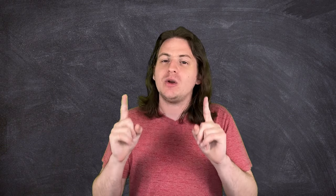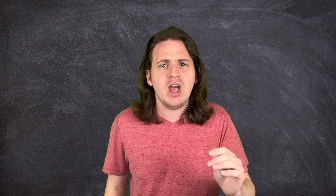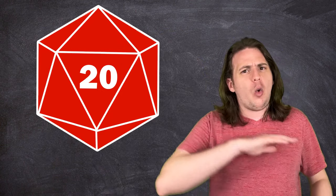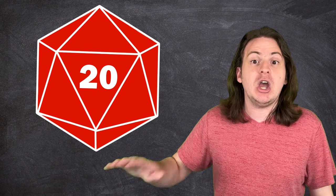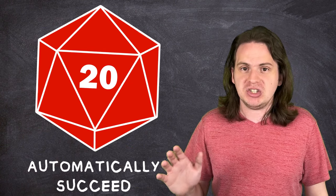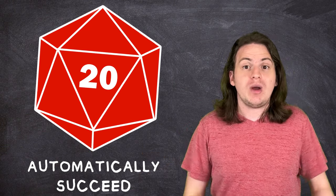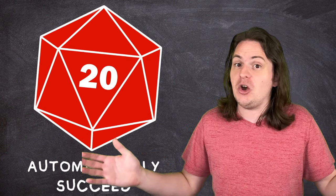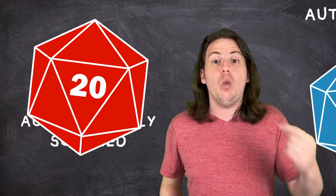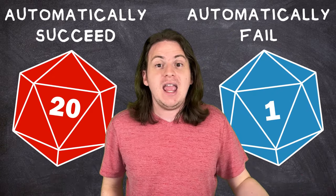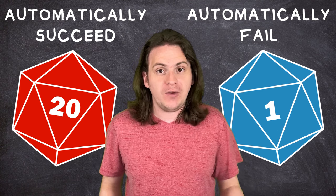Often times in these games, there's a rule where if you roll a 20, no matter what your target number was, you will automatically succeed. Even if the difficulty was 300 and you roll a 20 with no bonus, you still win. And the opposite is true for a one. No matter what, if you roll a one, you fail.